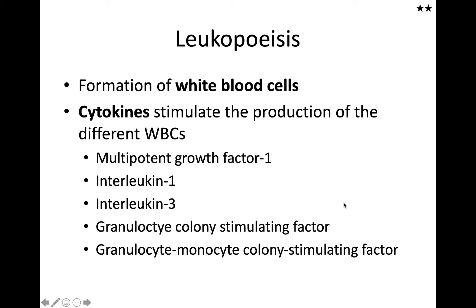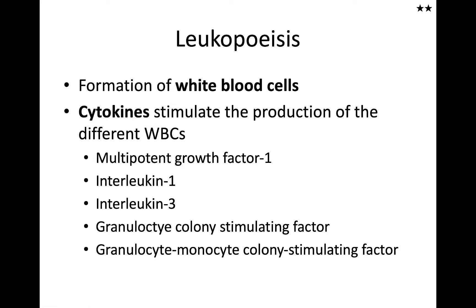There are quite a number of cytokines — these are only a few of them that communicate with those stem cells and cause them to develop. For example, the granulocyte-monocyte colony stimulating factor is going to stimulate the stem cell into producing granulocytes and monocytes. So you're going to get your neutrophils, monocytes, basophils, and so forth from this process.